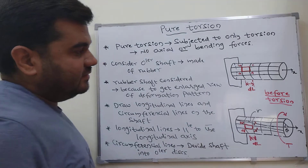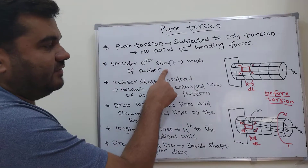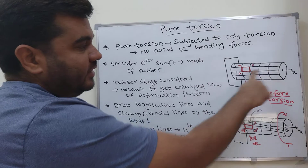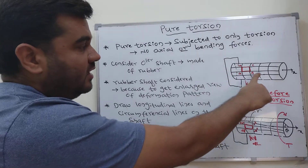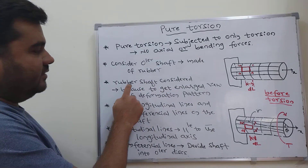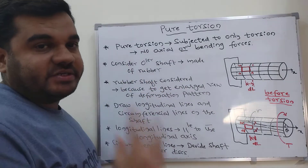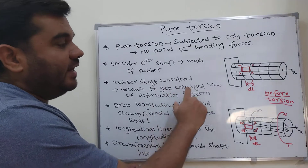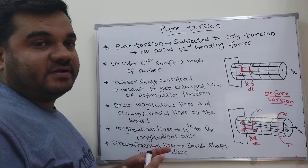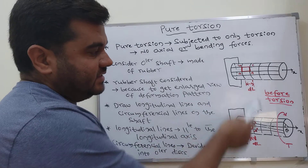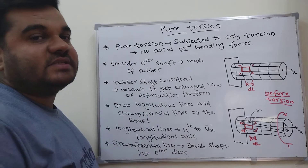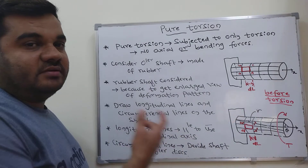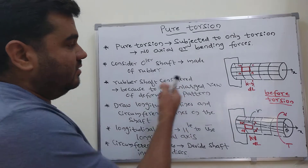We will consider two figures. First, consider a circular shaft made of rubber to analyze pure torsion — how it will happen. We are considering a rubber shaft because when it is subjected to torsion, we can view the enlarged portion of the deformation and the stresses. The main objective is to see how the stress distribution and deformation happens when subjected to pure torsion.